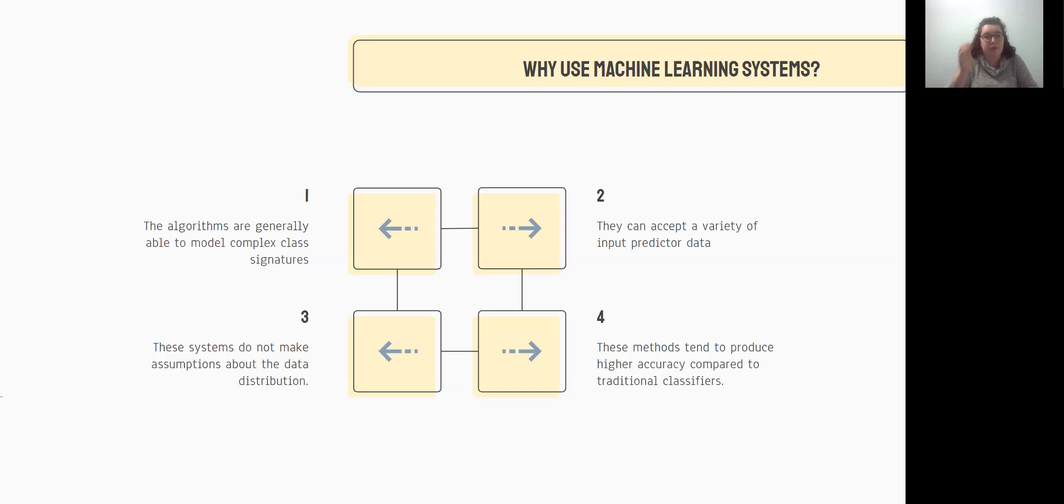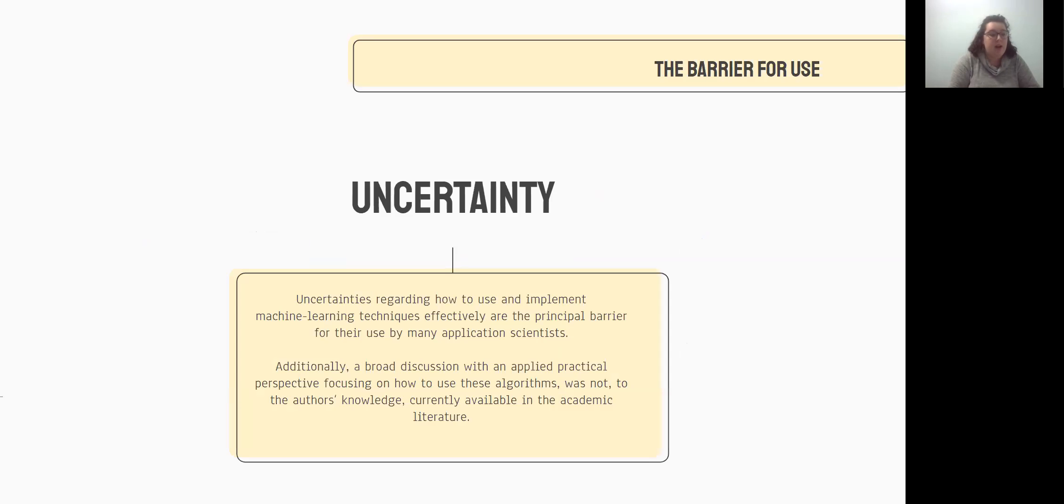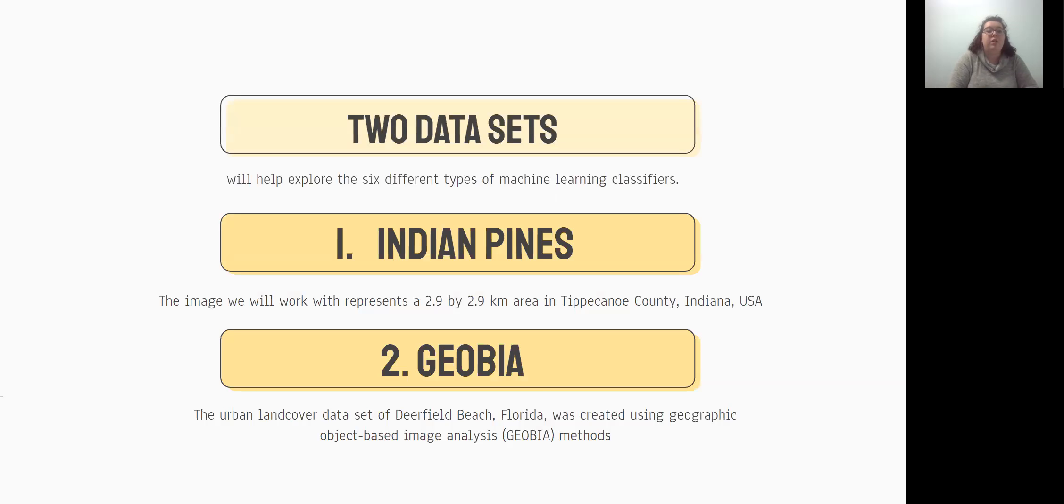So there is a barrier for use, which is uncertainty. The authors have found that there is a large amount of uncertainty regarding how to use and implement these techniques effectively. On top of that, the authors found that they couldn't find a broad discussion with an applied practical perspective focusing on how to use these algorithms. So they decided to be the ones to write it. So they've pulled, as we've discussed, two publicly available data sets. The first is the Indian Pines data set, which is an image of an area in Tippecanoe County, Indiana. And the second data set is an urban land cover of Deerfield Beach, which is in Florida.